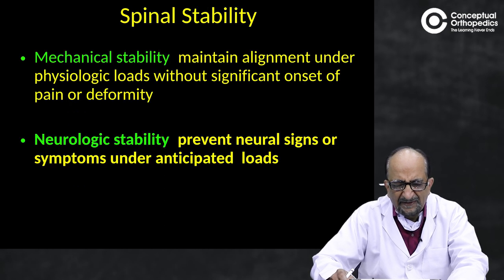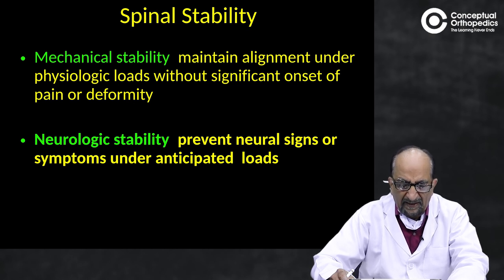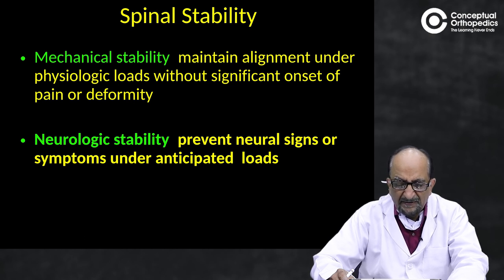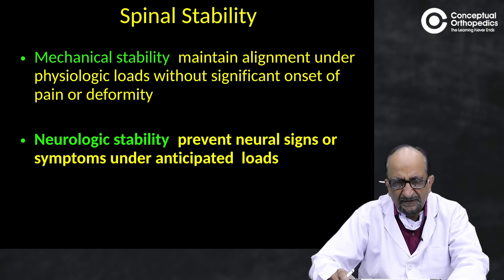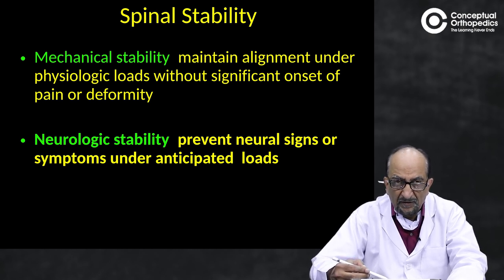Stability can be mechanical or neurological. Mechanical stability means the spine can maintain alignment under physiological loads without significant onset of pain or deformity. Neurological stability means that under anticipated loads there should be no neurological symptoms of either pain or dysfunction. For spinal stability, both mechanical and neurological stability are important.